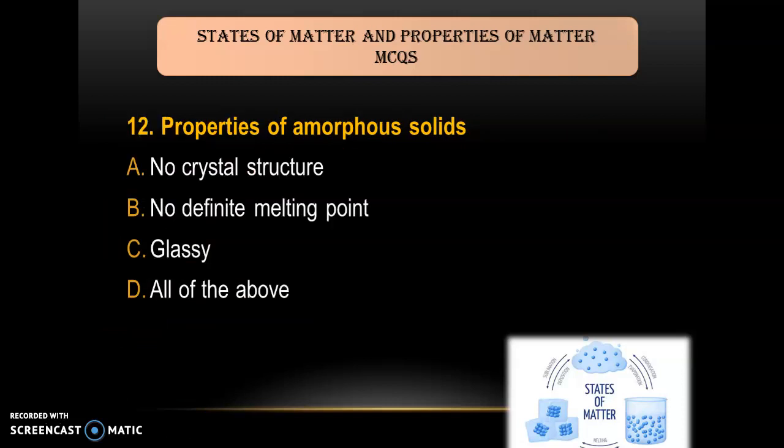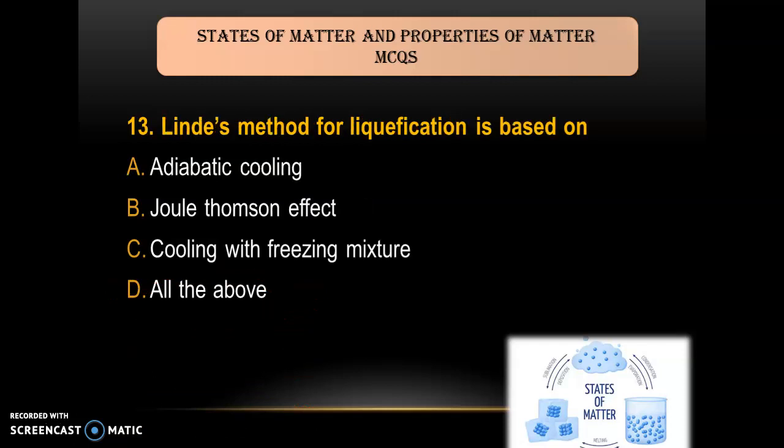Question 12: Properties of amorphous solid — A) no crystal structure; B) no definite melting point; C) glassy; D) all of the above. As we know, amorphous solids have no crystal structure, no definite melting point, and are glassy. So the answer is D — all of the above.